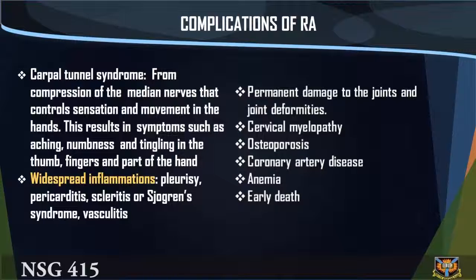Widespread inflammation includes pleuritis, pericarditis, scleritis, or Sjögren's syndrome. (33) Vasculitis, permanent damage to the joints and joint deformities, cervical myelopathy, and osteoporosis.